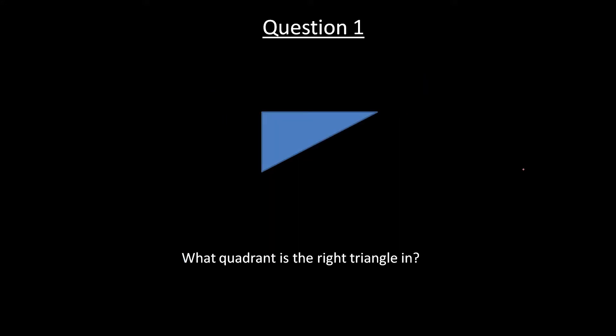Question one: what quadrant is this right triangle in? So we put the interior angle on a coordinate system, and that is quadrant 3.